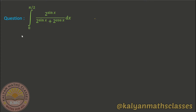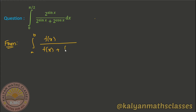Ok friends, now my question is: evaluate the integral from 0 to π/2 of 2^sinx divided by (2^sinx + 2^cosx) dx. This is in the form of integral a to b of f(x) divided by (f(x) + f(a+b-x)) dx, which is easy to solve.